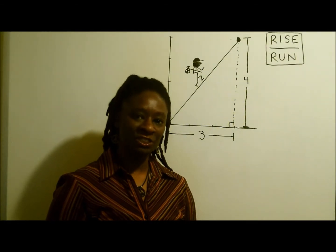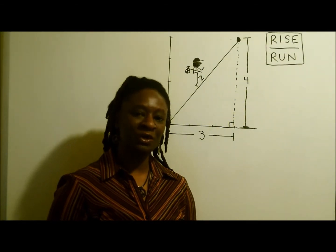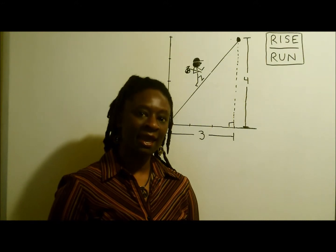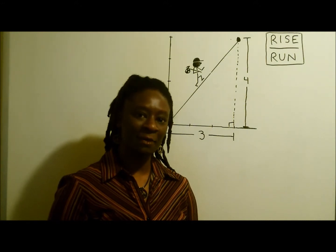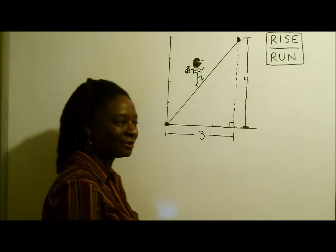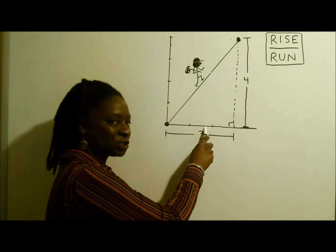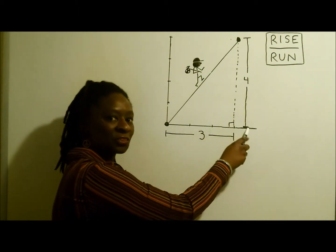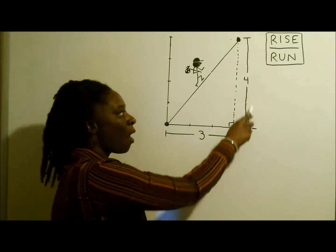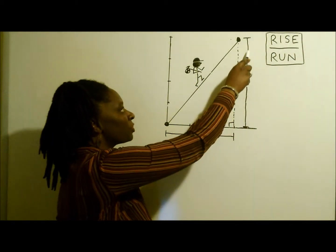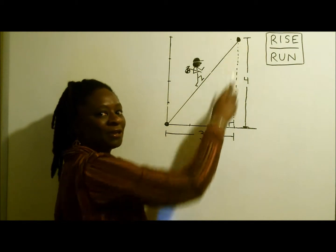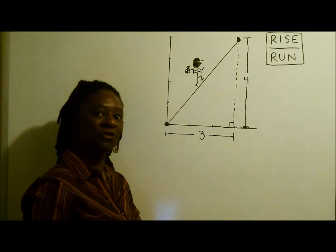The slope is the ratio between the rise over the run. If you were to climb a mountain and go three spaces to the right — one, two, three — and four spaces up — one, two, three, four — then your slope would be four over three.